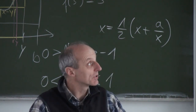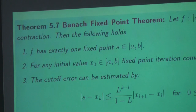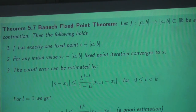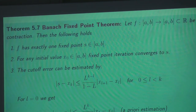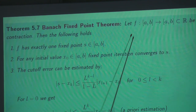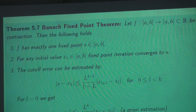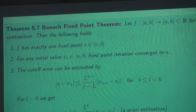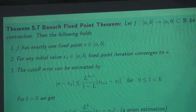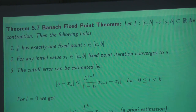Here we have the central theorem: the Banach fixed point theorem — one of the most important theorems in all of numerical mathematics. The condition is f has to be a contraction, and that is the only assumption we need. Then we have three properties: first, f has exactly one fixed point in the interval. Isn't that surprising? Even if our function seemingly has no fixed point, we apply Banach's theorem and then it has one.